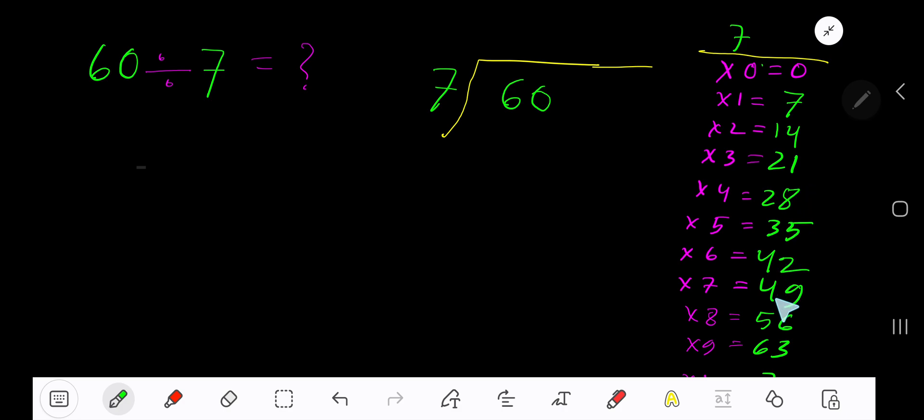21 plus 7 is 28. This process continues. 7 goes into 6 how many times? Actually, this is wrong. 6 is less than 7, so 0 times. 0 times 7 is 0. Subtract, then bring down the next digit.